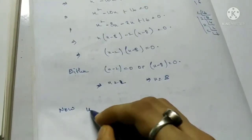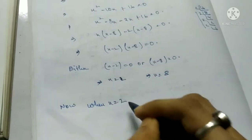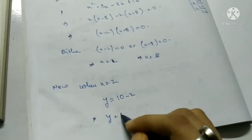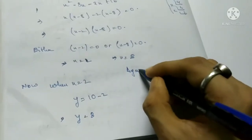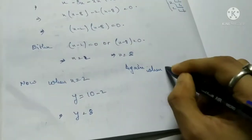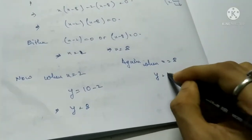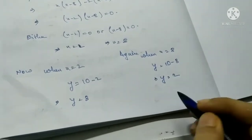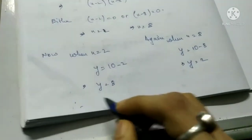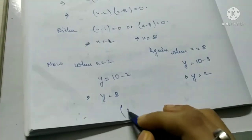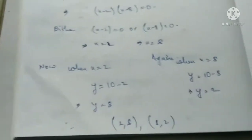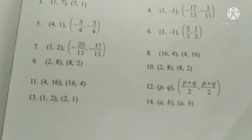When x equals 2, y equals 10 minus 2 equals 8. When x equals 8, y equals 10 minus 8 equals 2. Therefore the required solutions are (2, 8) and (8, 2). Checking the back answer: 2, 8 and 8, 2 — correct.